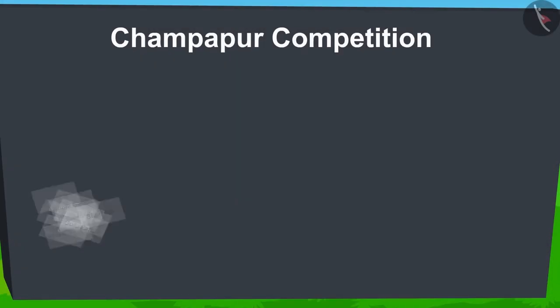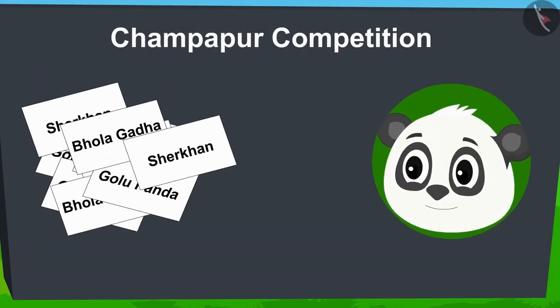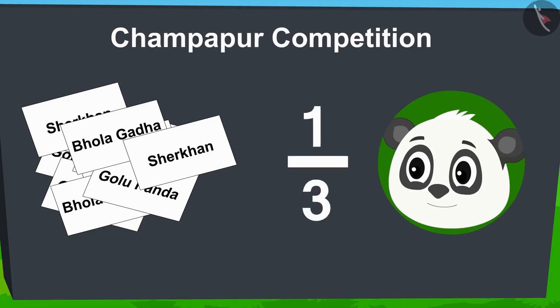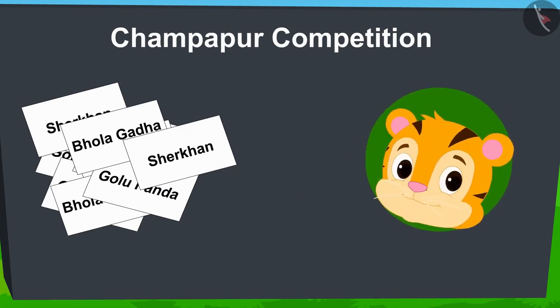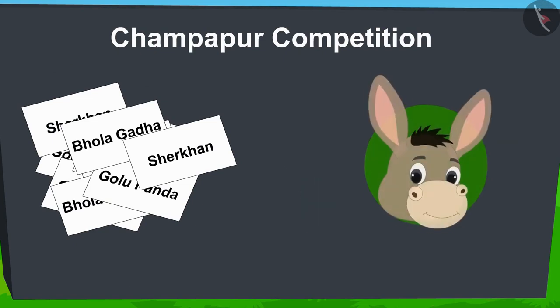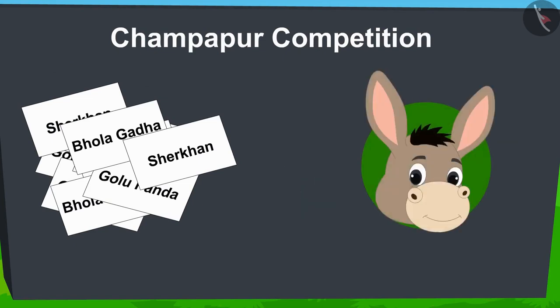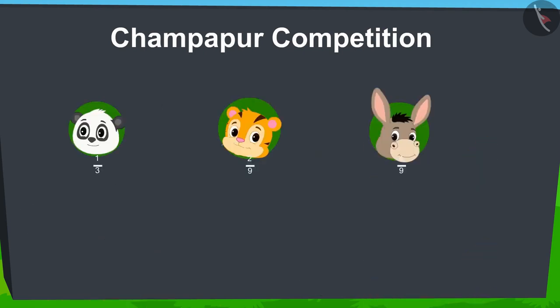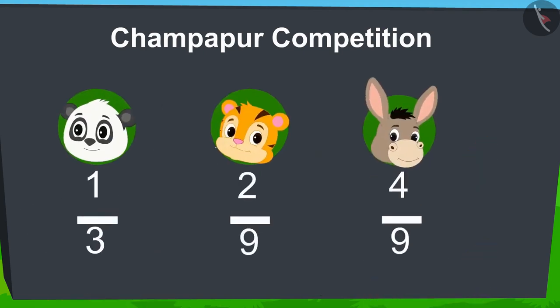Time is up and now the counting has begun. On counting, it was found that Golu's name is written on one third of the total paper pieces, Shere Khan's name on two ninth, and Bholla's name on four ninth. Children, can you tell who is the winner of the competition?